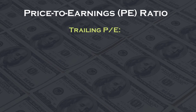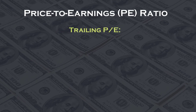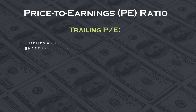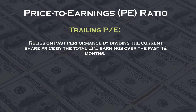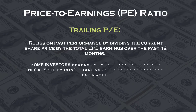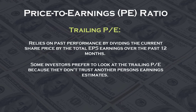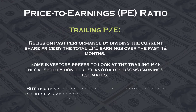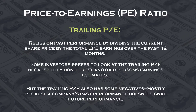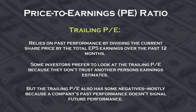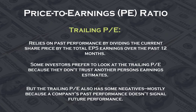You should look at two types of PE ratios to get a balanced picture of the company's value. Firstly, the trailing PE ratio. The trailing PE relies on past performance by dividing the current share price by the total EPS earnings over the past 12 months. It's the most popular PE metric because it's the most objective. Some investors prefer the trailing PE because they don't trust another person's earnings estimates. But the trailing PE also has some negatives, mostly because the company's past performance doesn't signal future performance.